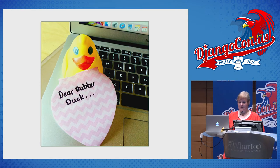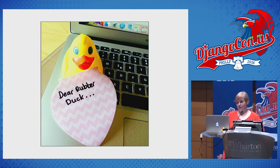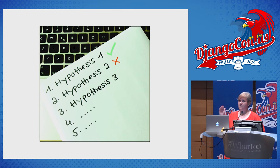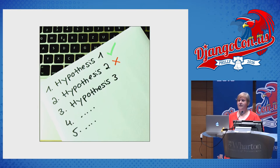Other times, rubber duck debugging won't lead you to a solution, so you can turn to Stack Overflow, Google, IRC, or various Slack channels. Another good way to debug is to come up with different hypotheses — look at your code, set up one, two, or three hypotheses about what could be wrong, then go through them and verify or falsify each one. Just write them down on paper, because if you keep it all in your head you might get confused.